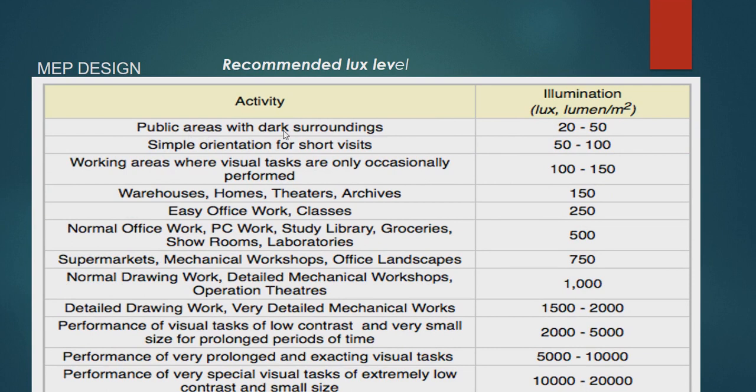Now find out the lux level. According to the recommended lux level: public areas for simple orientation or short visits is 50 to 100 lumens. Warehouses, homes, or theaters, we consider 150 lumens. Office work, study, library, grocery: 500. Supermarket: 750, and so on.